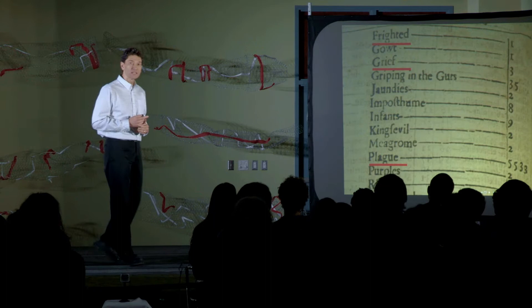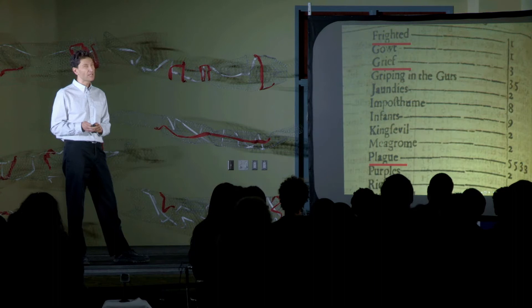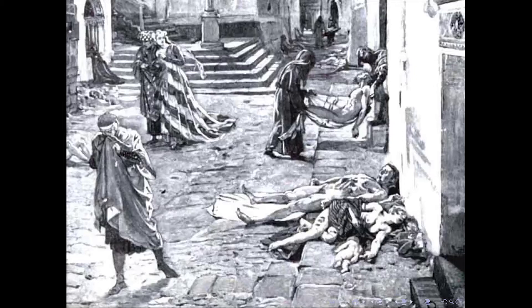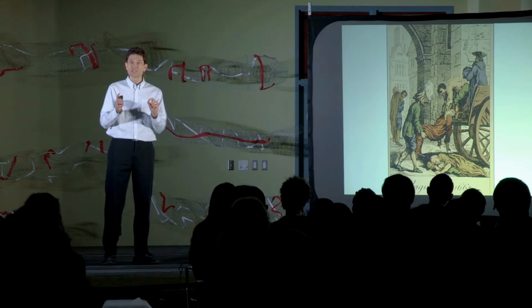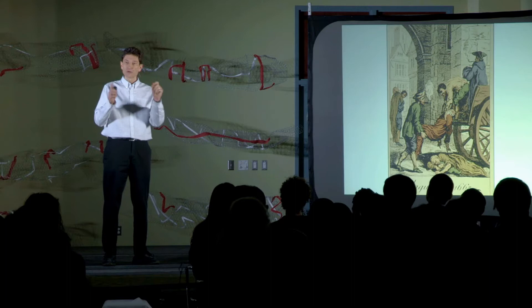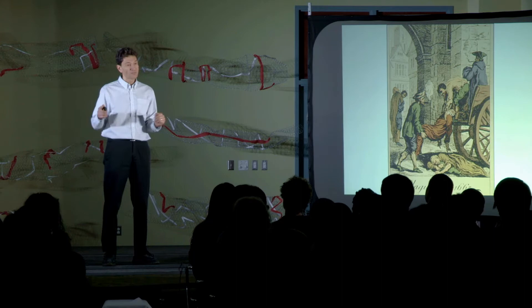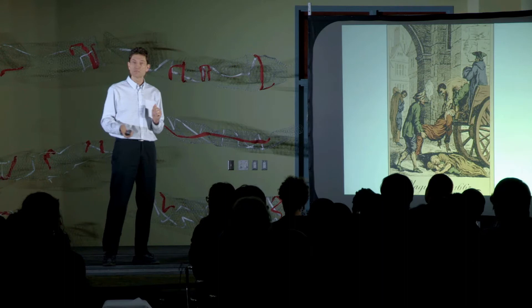Plague has a bad rep, and you've probably seen images of what it must have been like to be in a place where there was a plague epidemic. But it's not the horror of the disease that I want to think about. I want to think about what was the pattern of contagion — the pattern of spread throughout the population — and that we can do by piecing together the data from these bills of mortality.